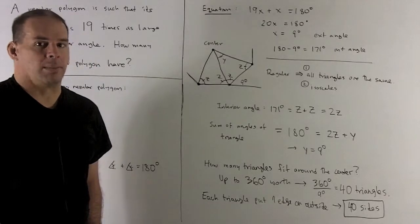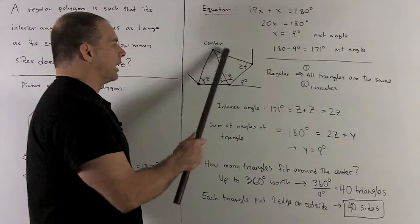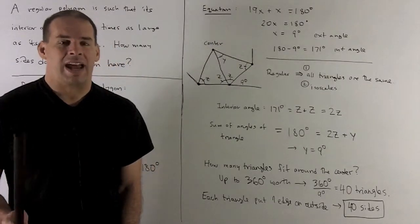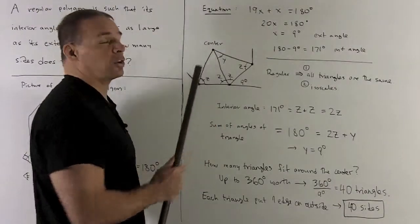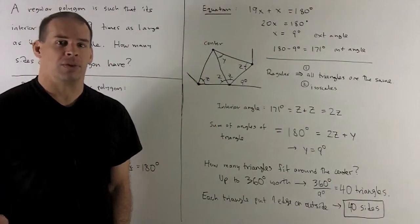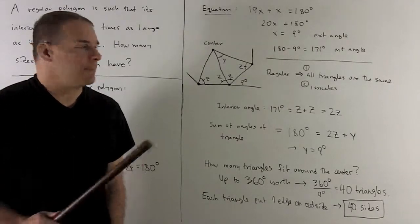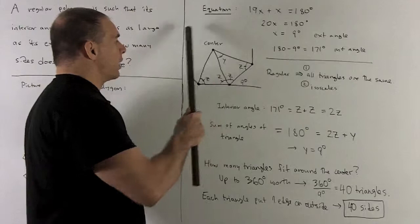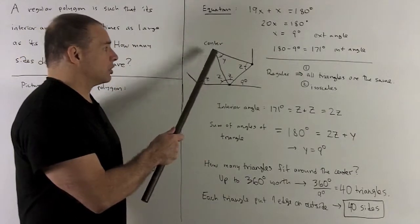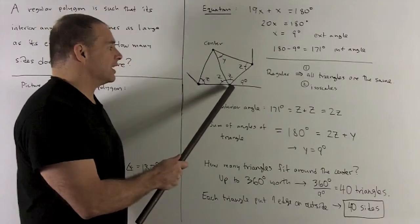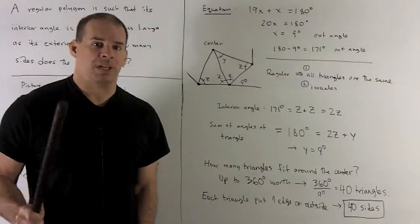So the question becomes, how many of these triangles can I fit inside the polygon? Or how many times can I fit 9 degrees into one loop around, which is 360 degrees. So 9 degrees into 360 degrees, we can do that 40 times. So that means I can put 40 triangles into my polygon. But note, each triangle contributes exactly one edge to the outside. So that's going to mean our polygon has 40 sides.